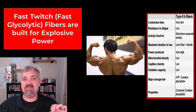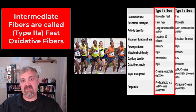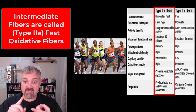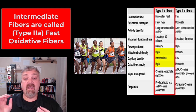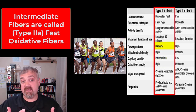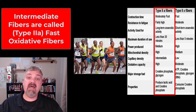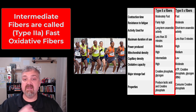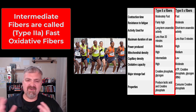Beyond slow twitch and fast twitch — type 1 and type 2b — there are intermediate fibers called fast oxidative fibers. They are fast and quick twitch, but they are also oxidative. They have more mitochondria and more blood supply than truly fast twitch fibers, so they sit somewhere in the middle — less power than pure fast twitch, but they have some myoglobin and more capillaries and mitochondria. They will last longer than a quick twitch fiber but not as long as a slow twitch fiber — right in between.